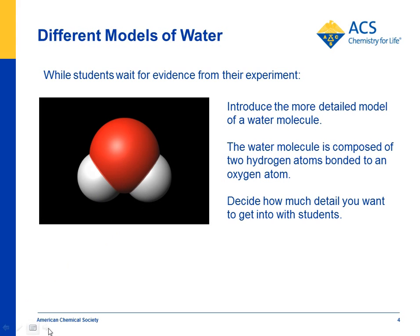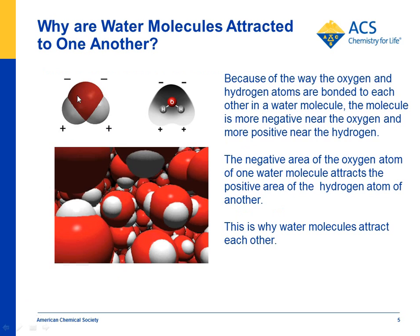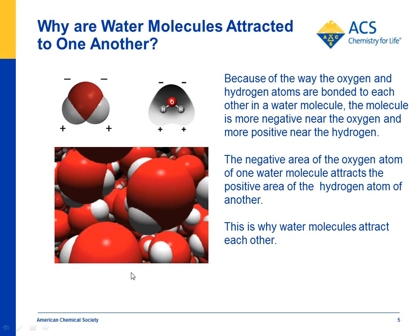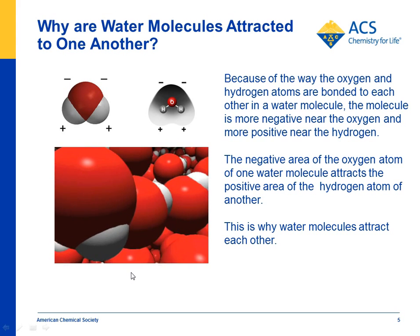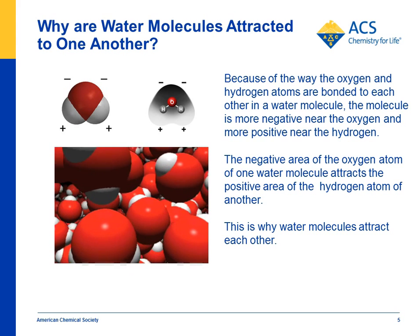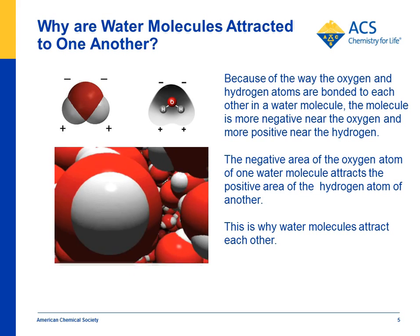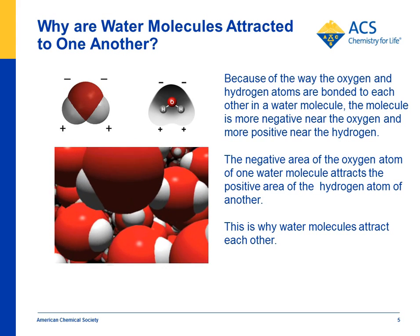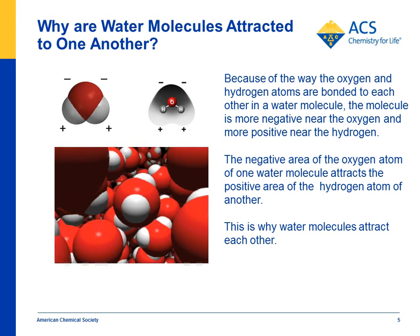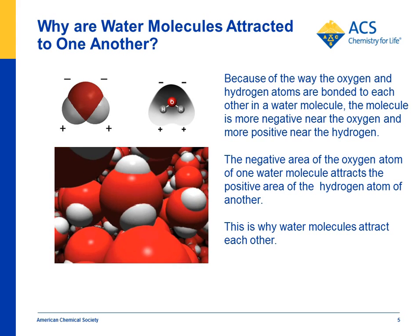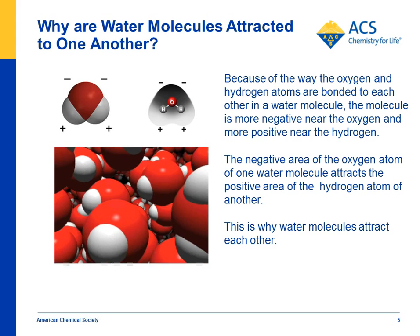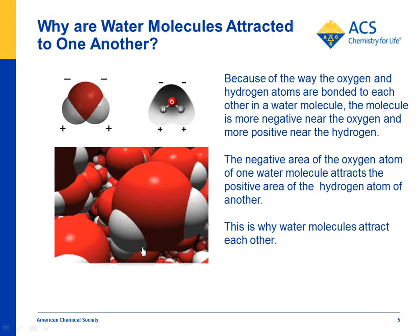We'll eventually show students — without going into a lot of detail — that a water molecule is polar: it has a positive end and a negative end. That's why water tends to be attracted to itself. They saw that back in Chapter 1, Lesson 1, when it was hard to separate water placed on wax paper. This animation shows that water molecules are close together and the positive and negative parts attract each other.